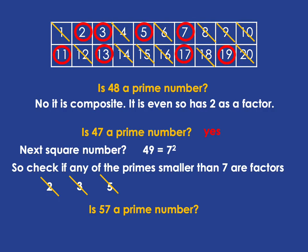What about 57 — is that prime? Again, we only check up to the square root. The next square after 57 is 64, which is 8 squared, so we check all primes smaller than 8. Does 2 divide in? No, 57 is not even. What about 3? Yes — 3 goes into 57: 3 times 19 equals 57. So 3 is a factor of 57, meaning 57 is not prime because it has a factor other than 1 or itself.